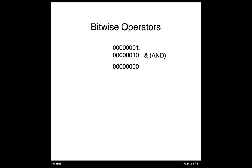With the AND operator, if both numbers in a bit column have a value of 1, then the output for that column is 1 as well. When both numbers are 0, obviously the output is also 0. There's only one combination that produces a 1 with AND — both numbers in that column must be 1. That's how the AND operator works.